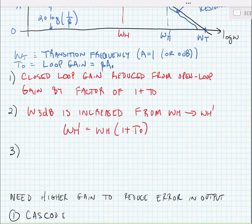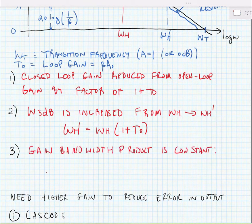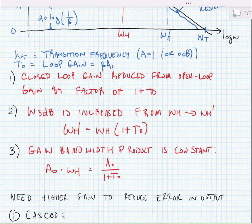Now, no matter what happens, the gain bandwidth product is constant. A sub 0 times omega H is equal to A sub 0 divided by 1 plus T sub 0, which is now the closed loop gain, times omega H times 1 plus T sub 0, which is now the new high frequency pole. Of course, you can see that the 1 plus T sub 0 term is canceled. Now, both of these are actually equal to the transition frequency.